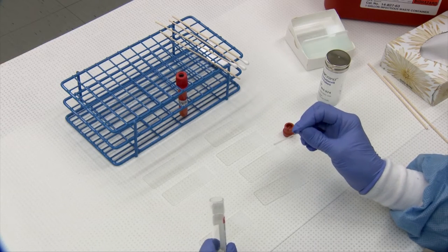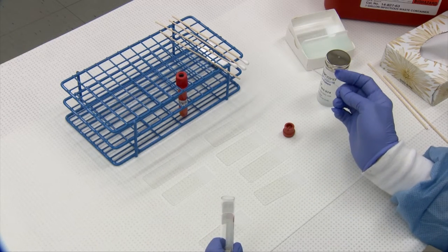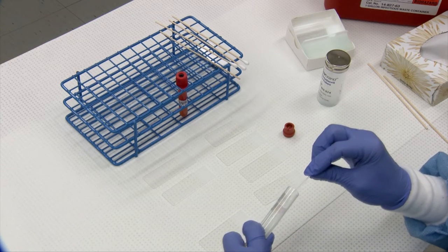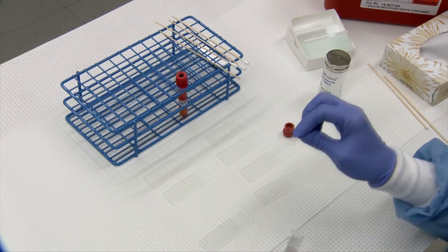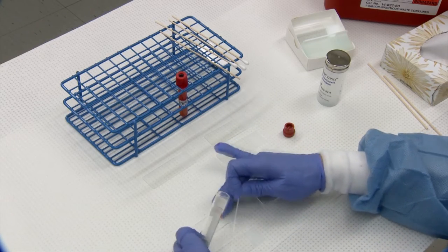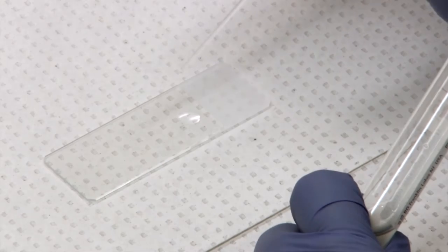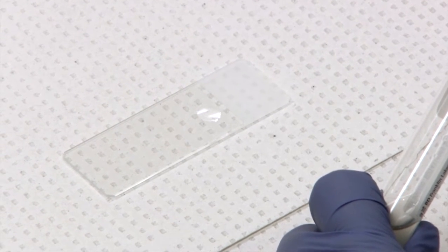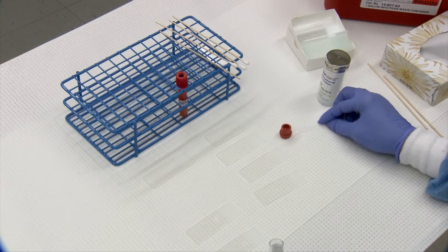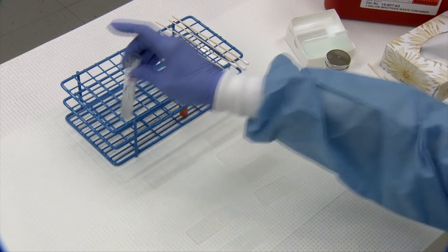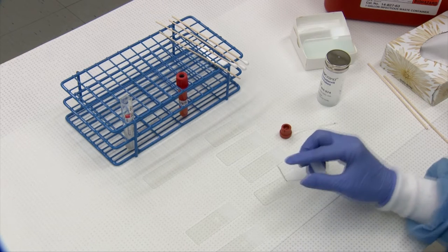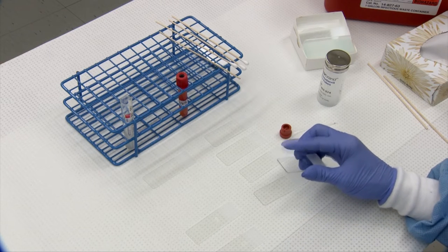Your direct and your line smears can be done using a PCV tube, packed cell volume tube. Fill your tube about three quarters full and you'll make a medium-sized drop again above your frosted edge. And these are very runny samples so it's a bit tougher to make a good smear than it does a blood smear. You don't need to worry about quality really. More of the goal is to get cells on the slide.